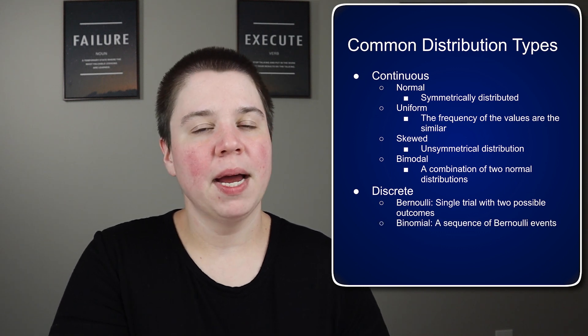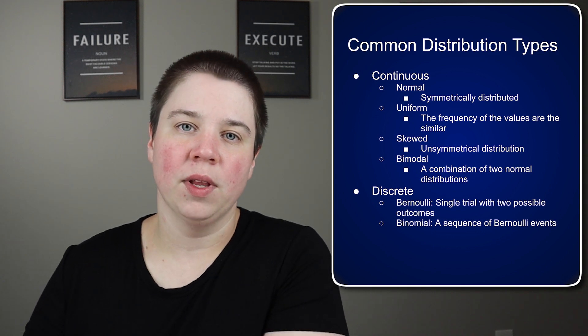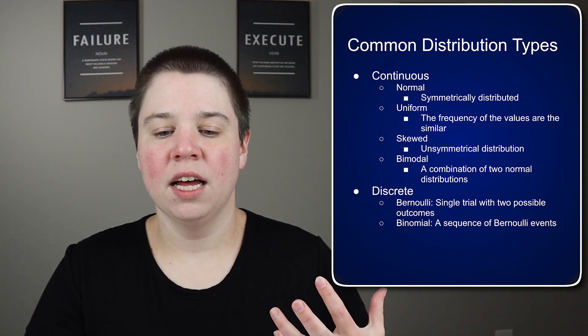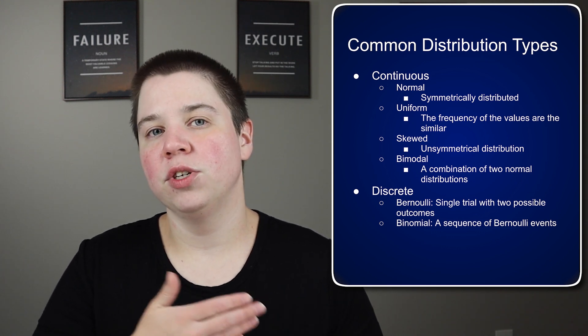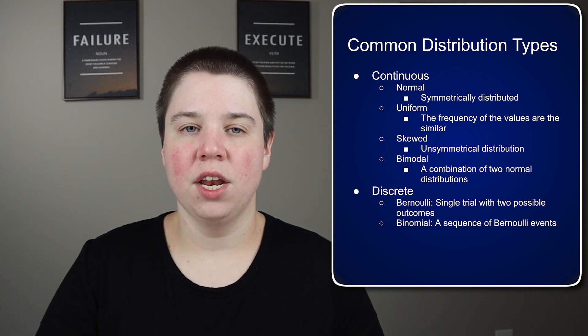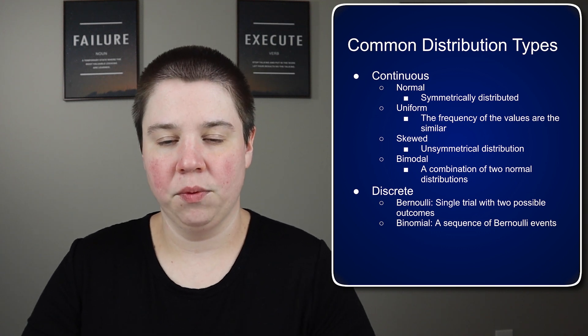And then you have the binomial distribution. So this is a sequence of Bernoulli events. When the trial is flipping a coin, you can have heads or tails. When you do that multiple times, then you can get a binomial distribution, which is a sequence of those events.